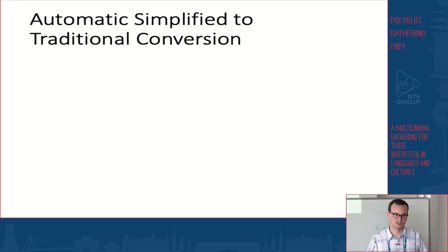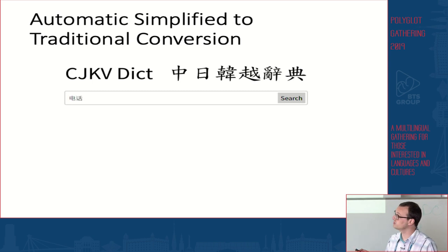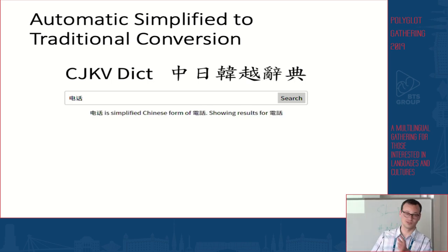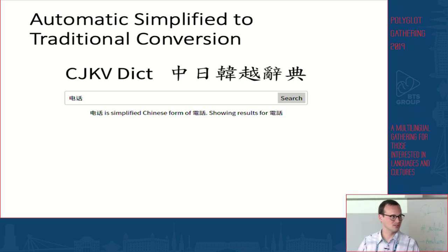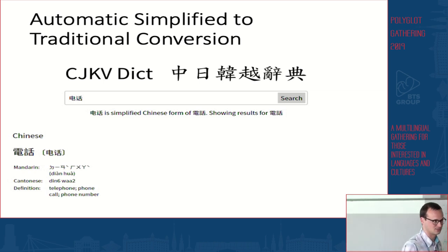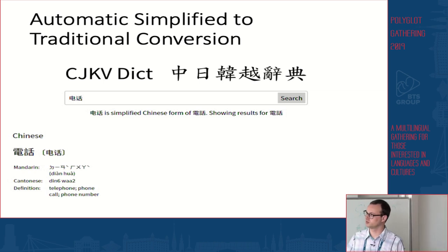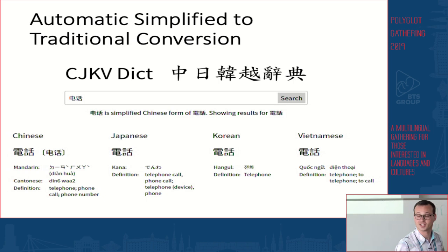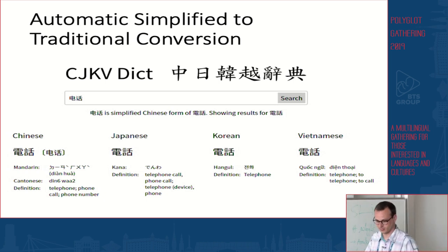One of the coolest features of CJKVDICT is that it can automatically convert simplified Chinese characters to traditional Chinese characters. If I look up two simplified characters, the dictionary detects they are a simplified Chinese form and instead looks up the traditional form. This allows you to not only find the Chinese reading — for example 'diànhuà,' meaning telephone — but also learn that this word exists in all other languages, something you couldn't do with only the simplified Chinese form.